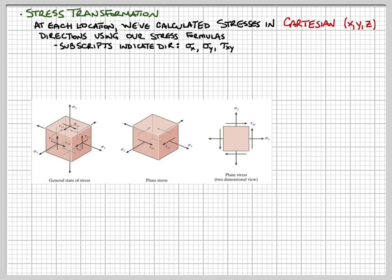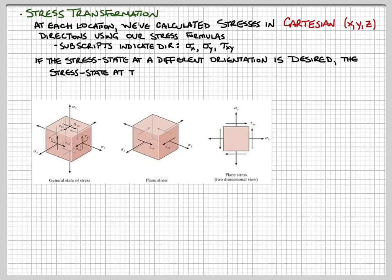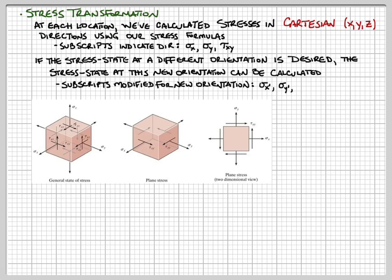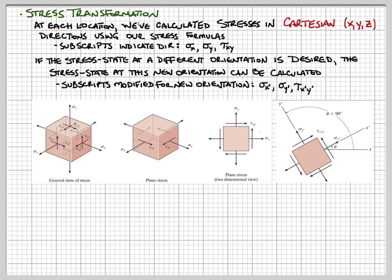For a 2D stress state there are two normal stresses and a shear stress, usually drawn on a small square element. If we want to examine the stress state at a different orientation — rotating the element through some angle theta — we use stress transformation calculations. We modify the subscripts to indicate a new x-prime and y-prime direction, and we can find the new stresses. Theta is the rotation of the x-axis to the x-prime axis.